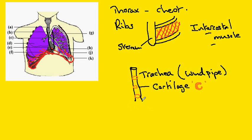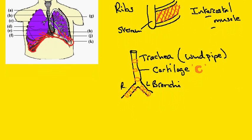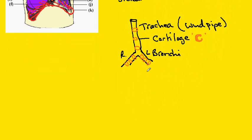The trachea, having entered the thorax, divides into two and these two divisions are known as the bronchi. These are also supported with cartilage to prevent collapse. The right bronchus takes air down into the right side of the lung and the left bronchus takes air down into the left side of the lung.